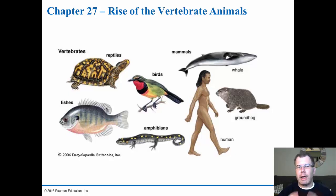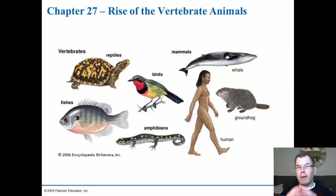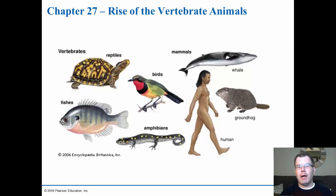You may be familiar with the amniotic egg from birds with the hard shell or lizards with the soft shell, but humans also have an amniotic egg — we just don't have the shell around it. Most mammals, including humans, have lost that shell because all of pregnancy is internal: internal fertilization, internal pregnancy, and then live birth. This is really what has established vertebrate animals onto land as we know it today.